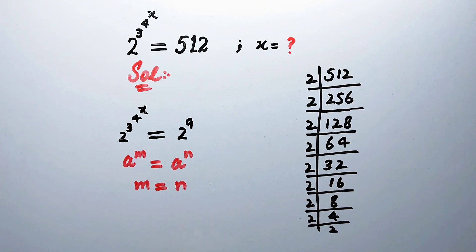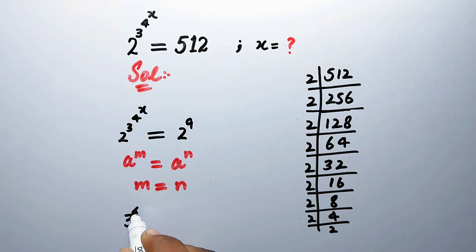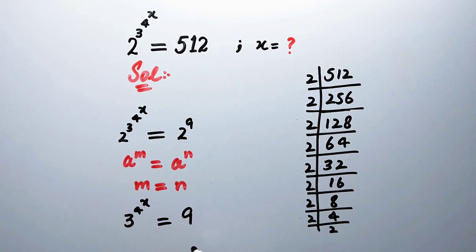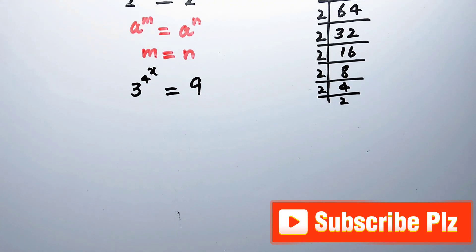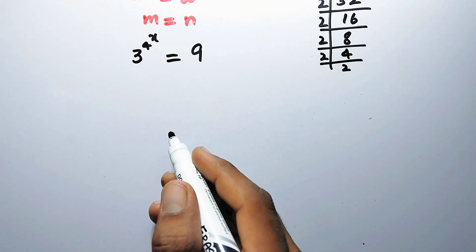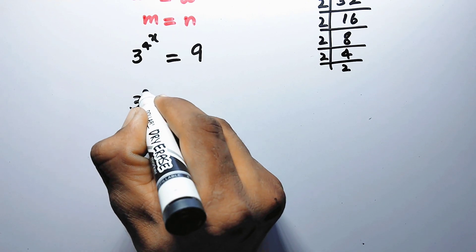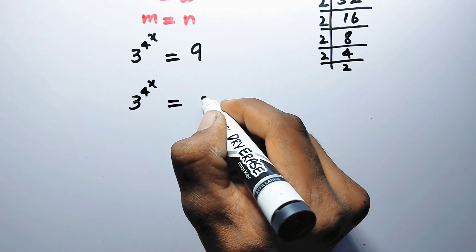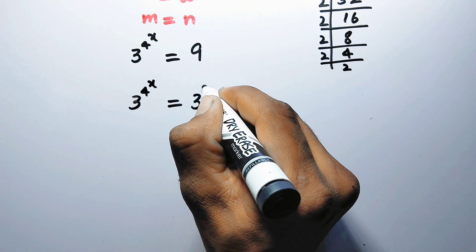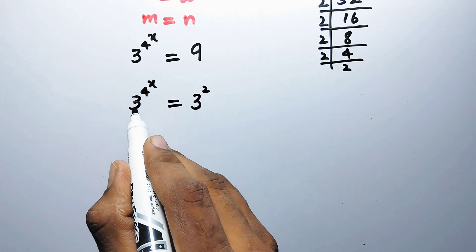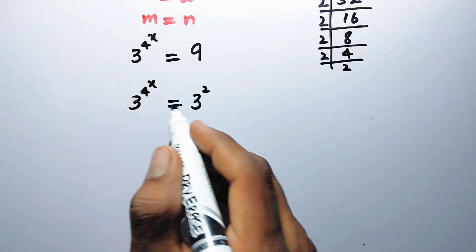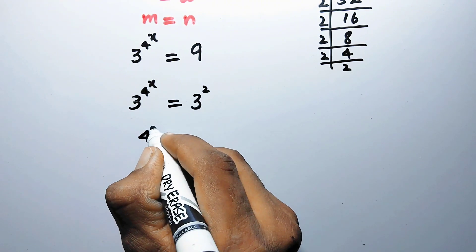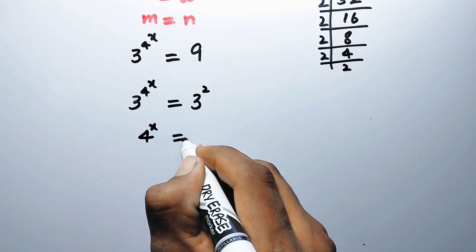Applying this property, we write 3 to the power 4 to the power x is equal to 9. In the next step, 9 is the same as 3 squared. So the bases are the same again, and by comparing we get 4 to the power x is equal to 2.